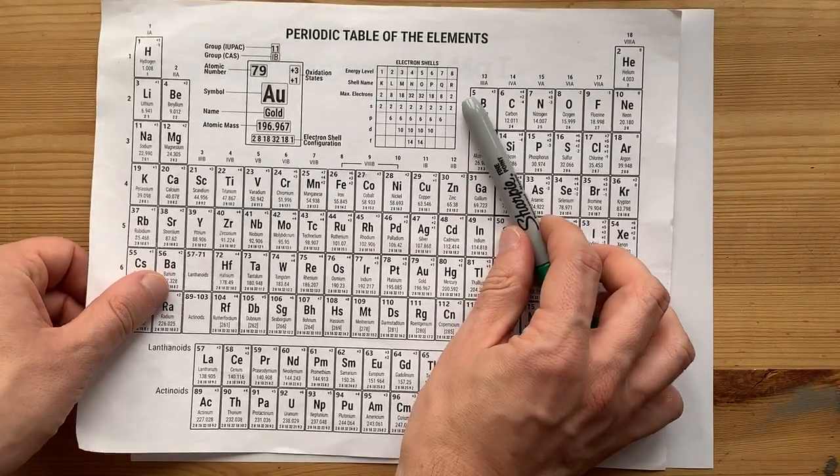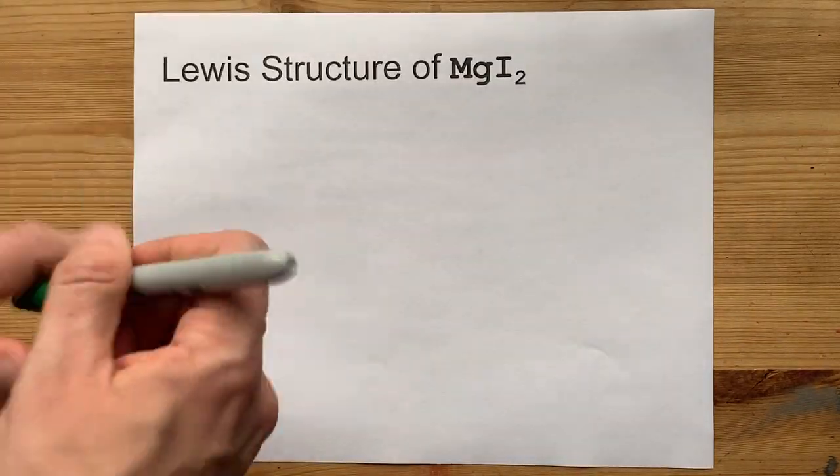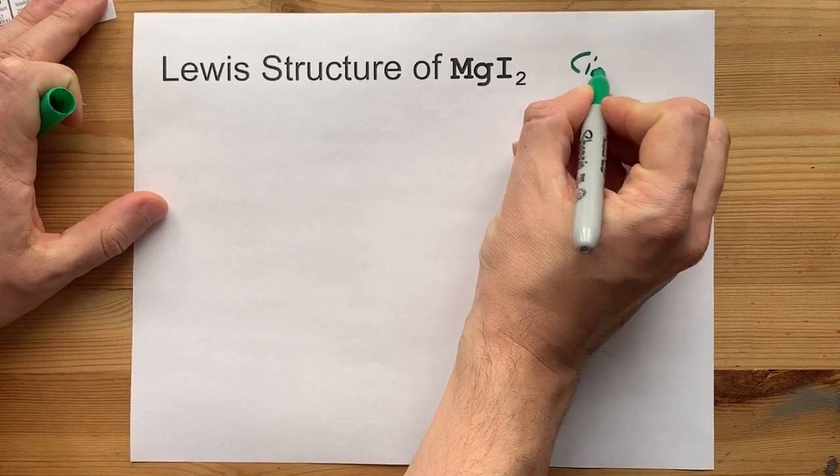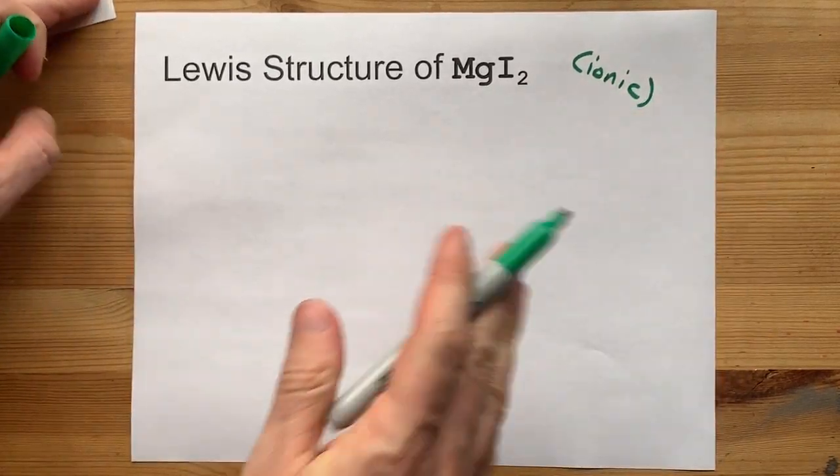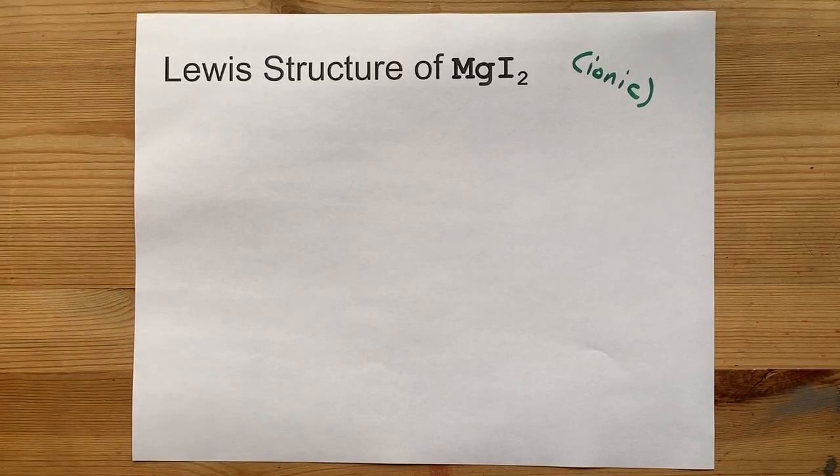Iodine is to the right of that staircase and is definitely a non-metal. When metals and non-metals combine together, you get an ionic compound. So we're going to be drawing an ionic Lewis structure here.